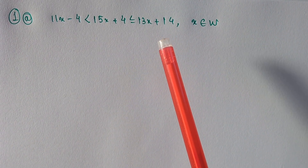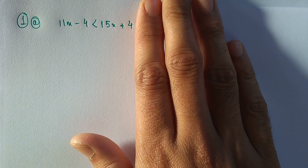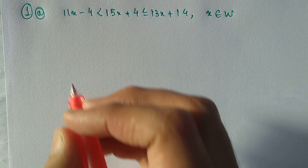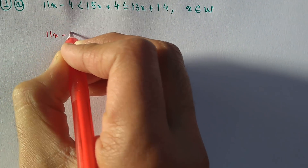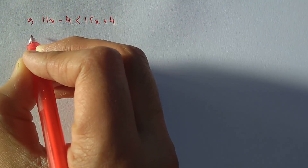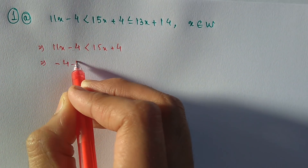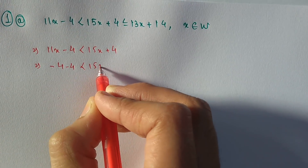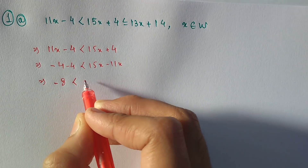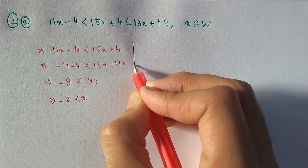When you solve an inequation, cover one part at a time. You get one inequality, then cover the other part and get another inequality. Solve both and you will get the values. For the first part: 11x minus 4 is less than 15x plus 4. Rearranging: minus 4 minus 4 is less than 15x minus 11x. Therefore, minus 8 is less than 4x, so minus 2 is less than x.